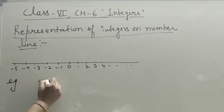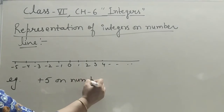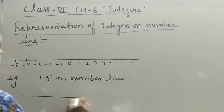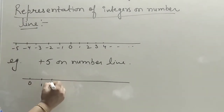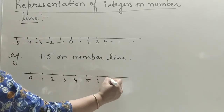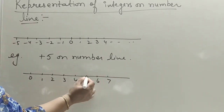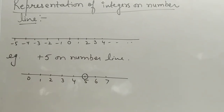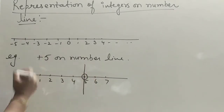For example, if the question is to show plus five on the number line, we have to draw a number line. Since the number is positive, we start from zero and move right: one, two, three, four, five — with equal space between them. We can highlight or draw a line at that point.